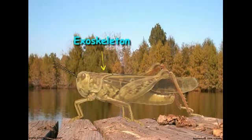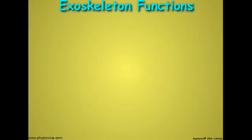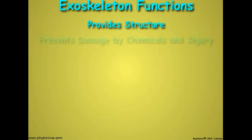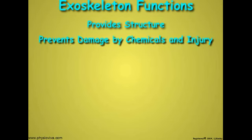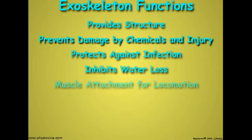In most insects, the integument forms a rigid exoskeleton that surrounds the outer surface of the animal. The exoskeleton serves a variety of functions. It gives the insect structure, prevents chemical and mechanical damage, protects against invasion by parasites and infection by microorganisms, inhibits water loss, and serves as the attachment point of muscles for locomotion.